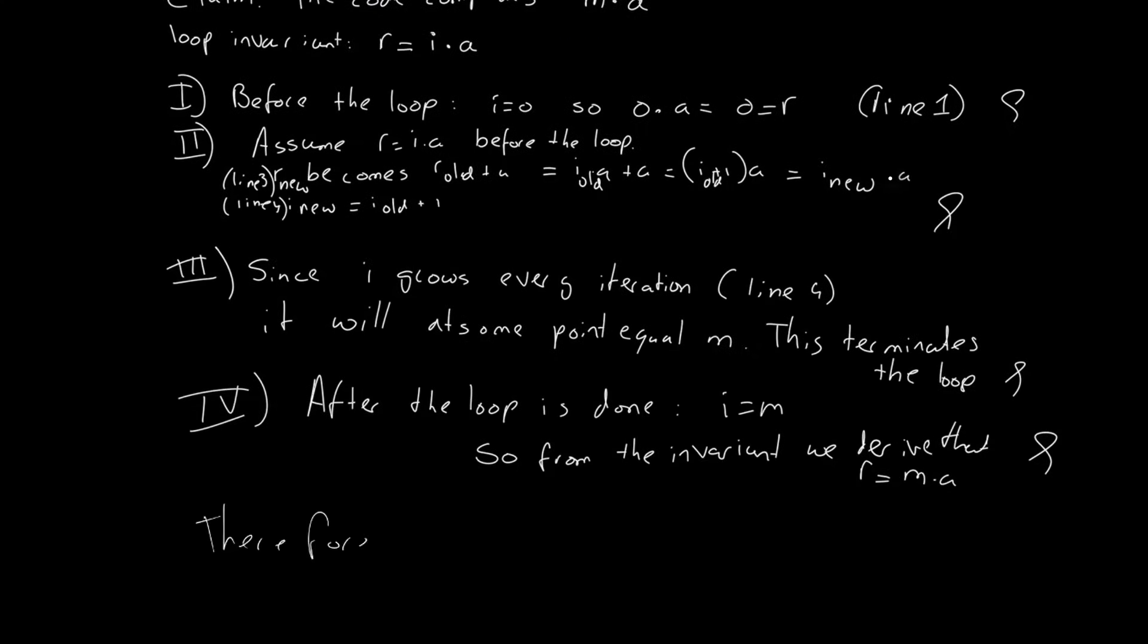And, with all four of these steps done, we can now conclude that this code computes r equals m times a. QED.